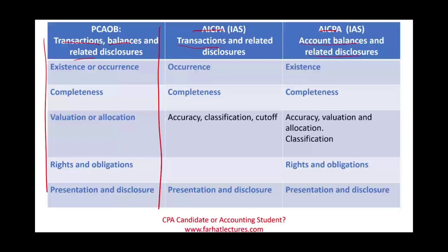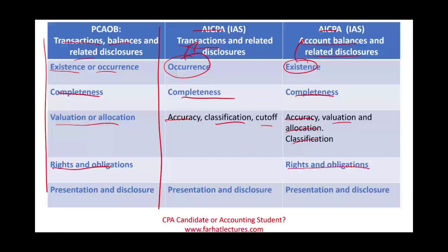PCAOB has existence and occurrence together; AICPA says occurrence for transactions and existence for account balances. Completeness applies to all. Valuation or allocation under PCAOB maps to accuracy, classification, and cutoff under AICPA — accuracy and valuation/allocation for transactions, classification for account balances. Rights and obligation: we always have to make sure we have rights to assets and obligation for liabilities; it doesn't apply to transactions. Presentation and disclosure applies to everything — assets, liabilities, equities, revenues, expenses, all accounts.